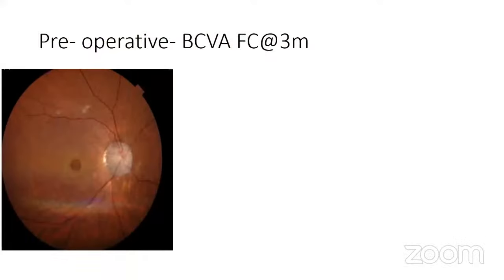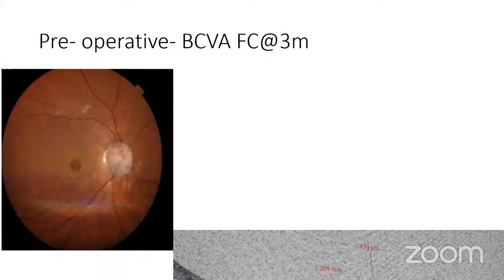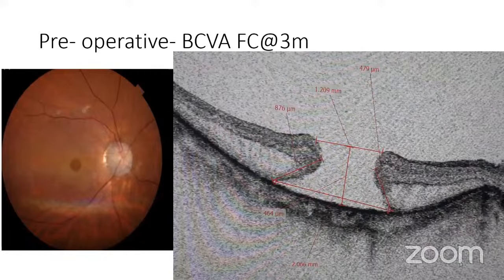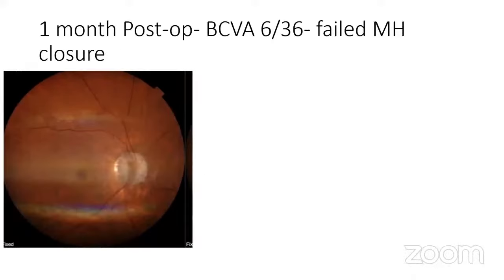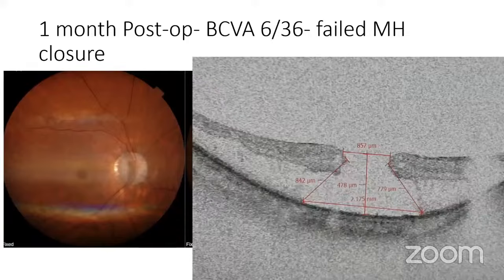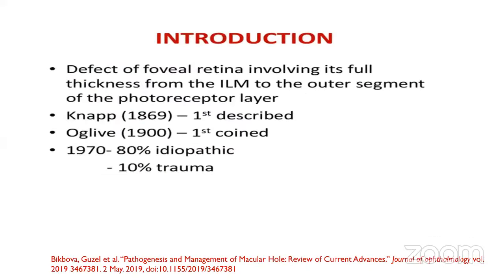Pre-operative BCVA was finger count and this is the OCT. In post-op one month, BCVA improved to 6/36 but the hole failed to close. We are going to discuss what are the various management techniques. First we'll discuss macular hole as a concept — it is a defect involving its full thickness from the ILM to the outer segment of the photoreceptor layer.